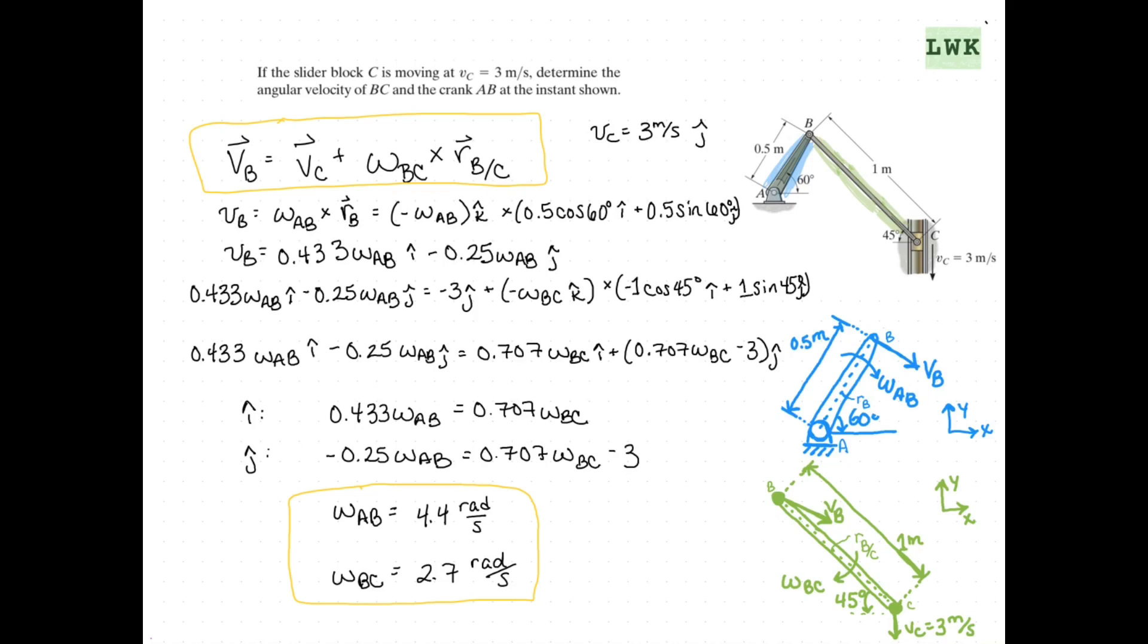And then we combined them together. We did use a little bit of our geometry and our trig using our angle. So that was allowing us to relate our components. And at the end, we got our angular velocities for AB and BC.